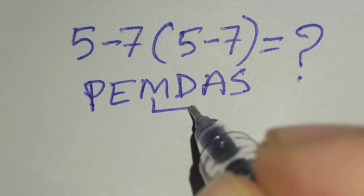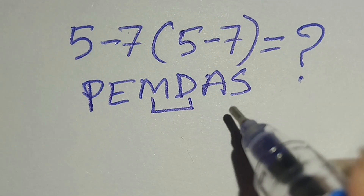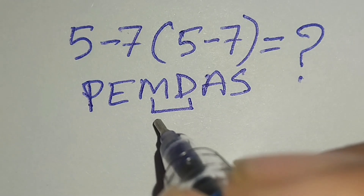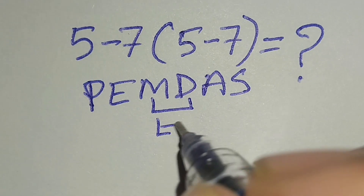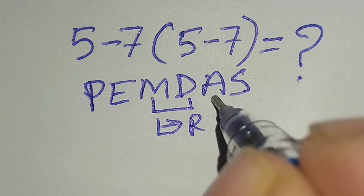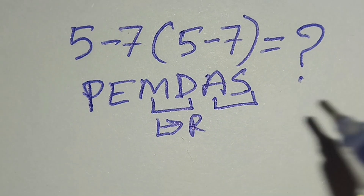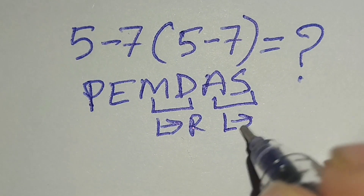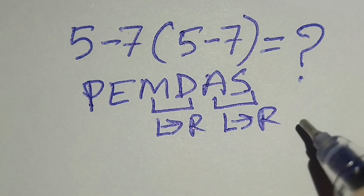Remember, multiplication and division have the same priority — for this we have to work left to right. And addition and subtraction have the same priority — for this we have to work left to right also.